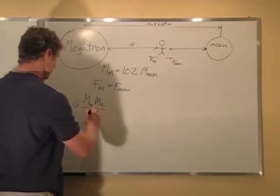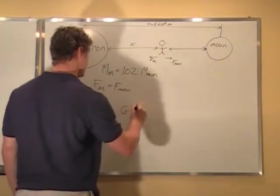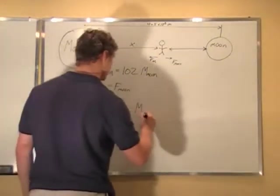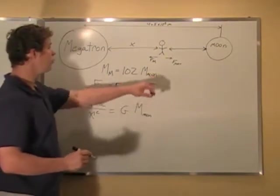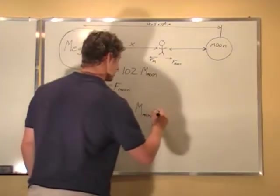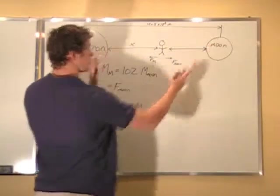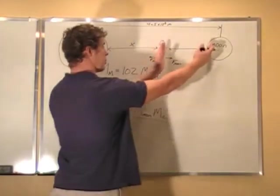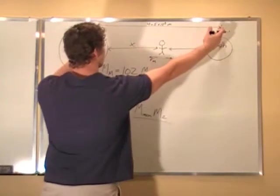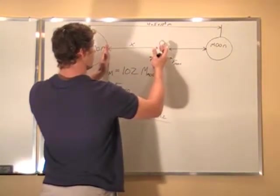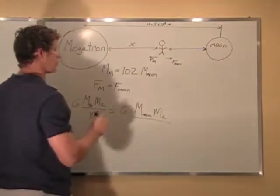R squared equals G, in this case we have the mass of the moon, M2, in this case it's still M2 because it's the person. And the radius this time, it isn't this whole distance because we're looking at the distance between the moon and the person. So the distance between the moon and the person is going to be this minus this. So it's 4.5 times 10 to the 8 minus X squared.